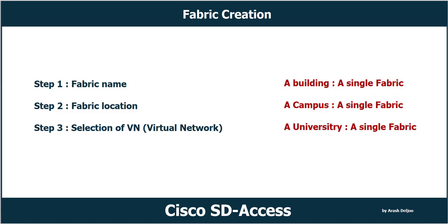For example, a university with six or more buildings and high-bandwidth links between each building could be defined as a single fabric, as long as the number of devices is within the supported scale. However, if some buildings have dedicated external high-speed links to a data center or to the internet that must remain available during an outage, then those buildings should be defined as separate fabric locations. This consideration is necessary because fabric node roles such as control plane and border are shared within a single fabric and are required for proper operation. If connectivity is lost to any of these devices, the fabric operation degrades.